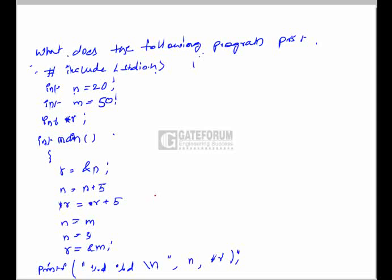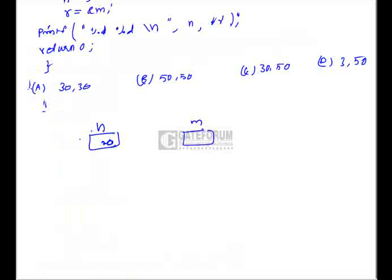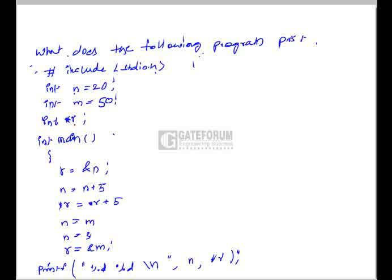A program is given and we have to find the output. In this program, n and m are declared as integer variables; 20 is assigned to n and 50 is assigned to m. Variable n contains the value 20, m contains 50. Here r is declared as a pointer variable which stores the address of an integer variable, so the address of n is stored in r.